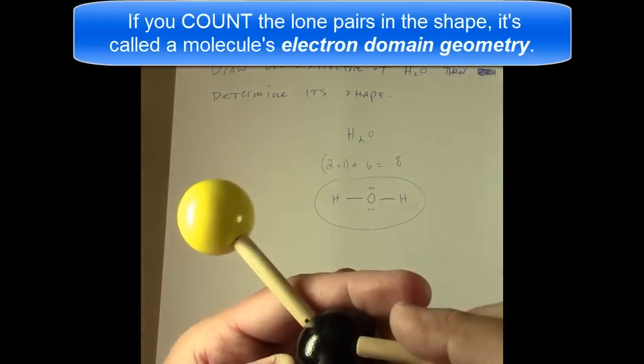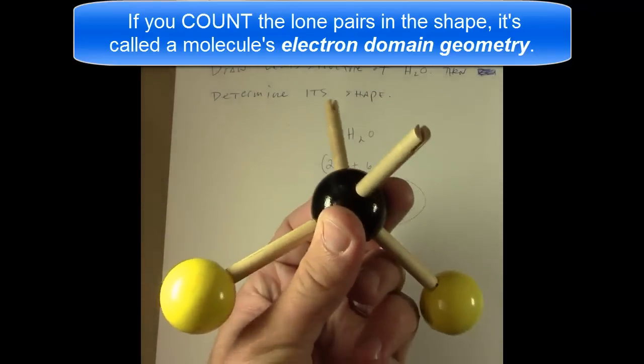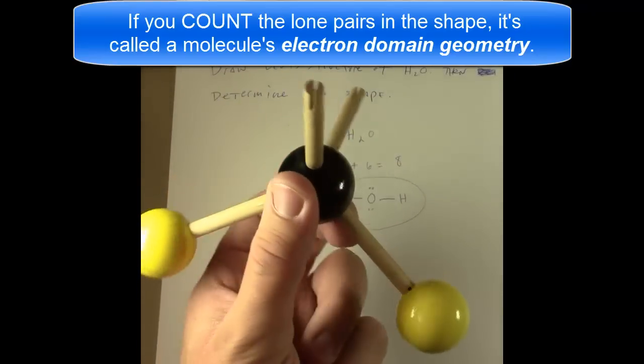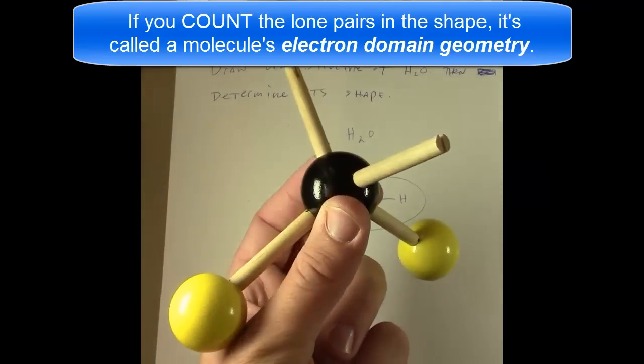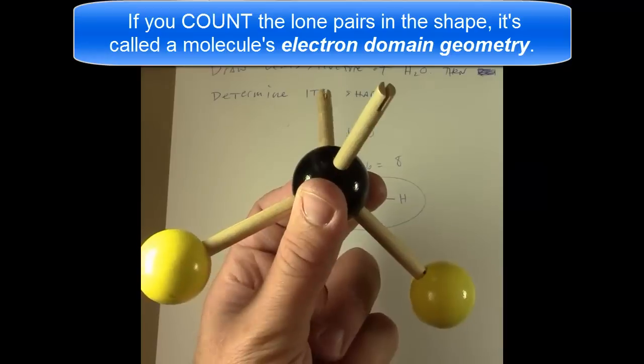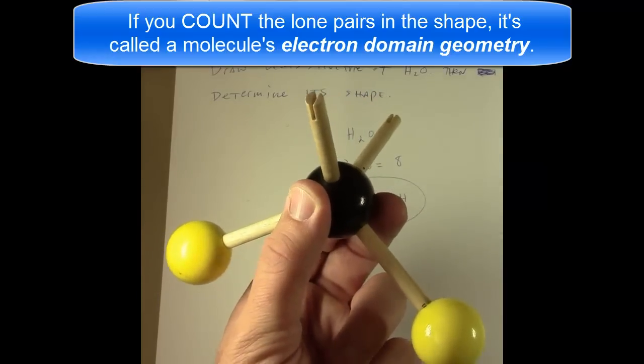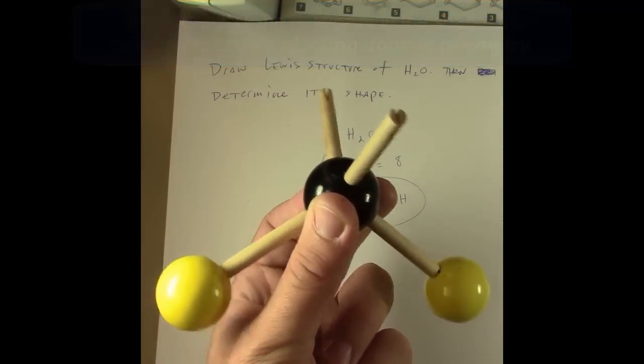If, however, we count everything, including the lone pairs, as contributing to the geometry, then the overall shape is considered tetrahedral. This type of geometry, the one in which we count the lone pairs, is called electron domain geometry.